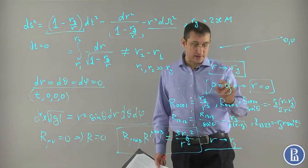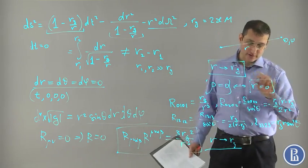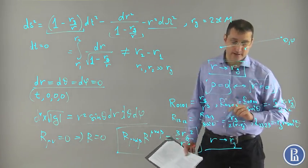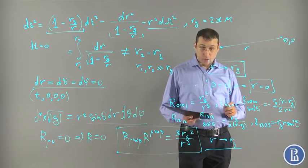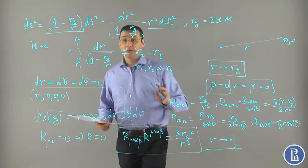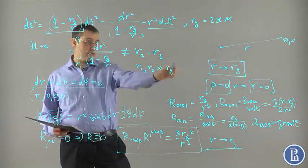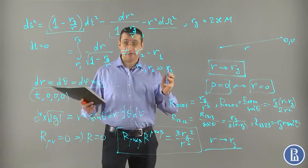It means that this singularity is the coordinate singularity. It's similar to this singularity for Rindler space that we have encountered in the first lecture. Or this singularity in polar coordinates, two-dimensional polar coordinates, that we have also discussed in the first lecture. There is another way to see that there is nothing horrible happens at this point for this metric. And we're going to discuss it now.